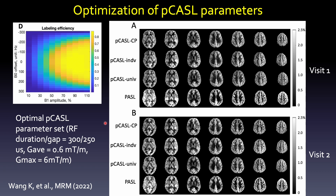However, that method requires individual calibration. Another way is to use optimized labeling parameters. For example, our group proposed a very short RF duration and gap using 300 and 250 microseconds respectively, trying to minimize phase error accrual during the PASL pulse. Using this method, we can achieve reliable PASL imaging without any adjustment. On top of that, you can use PTX pulses with PTX B1 shimming to push up signal by 10%. And if you don't want individual calibration, you can use average B1 shimming — we call it universal shimming — to improve signal slightly by 5%. Overall, all three conditions perform well for PASL with good test-retest reliability.